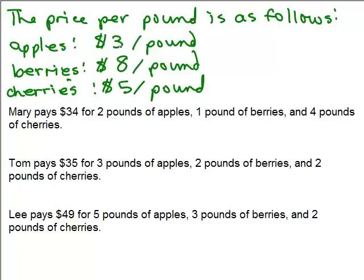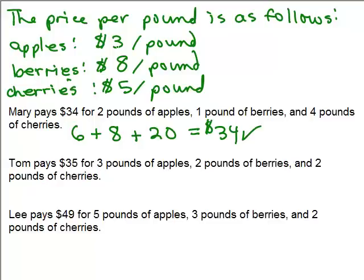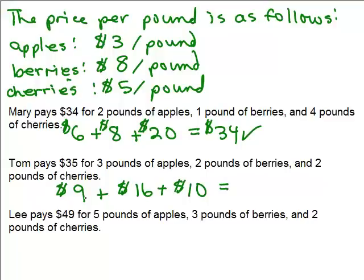Mary pays for 2 pounds of apples at $3 a pound — that's $6 — plus 1 pound of berries at $8, plus 4 pounds of cherries at $5 a pound, that's $20. So that's 6 + 8 + 20 = $34, and that checks out. Tom buys 3 pounds of apples at $3 a pound — $9 — plus 2 pounds of berries at $8 a pound — $16 — plus 2 pounds of cherries at $5 a pound — $10. So 9 + 16 + 10 = $35. That checks out.